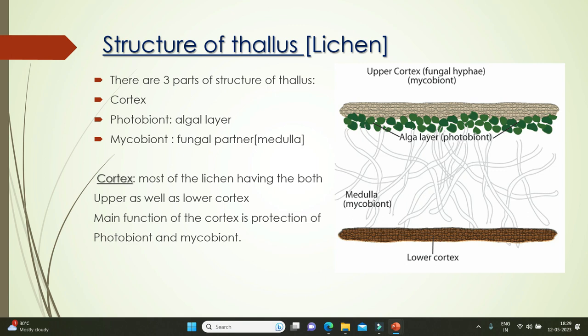Coming to the structure of the thallus of the lichen — there are three parts. The upper cortex is on top, followed by an algal layer called the photobiont in the middle. Below the algal layer is the mycobiont, the fungal partner, also called the medulla. Below the medulla is the lower cortex. The main function of the cortex is protection of both the photobiont and mycobiont.